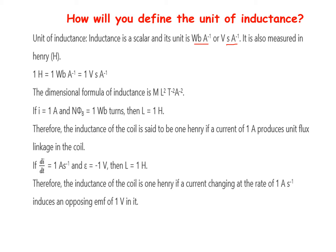We know the coefficient of self inductance: L is equal to NΦ divided by i, where N is the number of turns, Φ is the magnetic flux, and i is the current. It is also equal to epsilon divided by di by dt, where epsilon is the induced EMF — its unit is volt — and di by dt has current unit ampere.